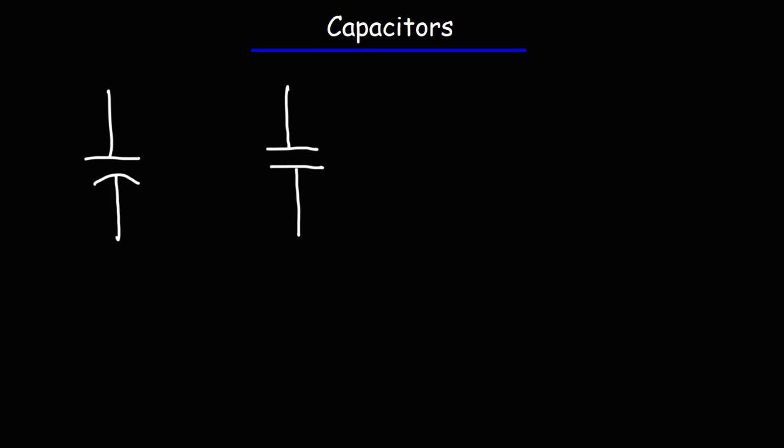In this video, we're going to talk about capacitors. Capacitors are devices that store electrical energy. They're different from batteries — batteries store electricity in the form of chemical energy. Capacitors can charge and discharge at a very rapid rate, whereas batteries take a long time to charge or discharge. This is due to the fact that capacitors have a very low internal resistance compared to batteries.